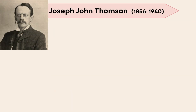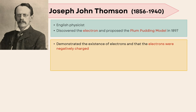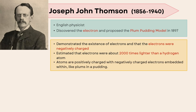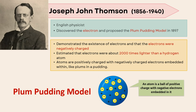Joseph John Thompson was an English physicist who discovered the electron and proposed the Plum Pudding model in 1897. He demonstrated the existence of electrons and that electrons were negatively charged. He estimated electrons were about 2,000 times lighter than a hydrogen atom. Atoms are positively charged with negatively charged electrons embedded within, like plums in a pudding. The Plum Pudding model illustrates atoms as a ball of positive charge with negative electrons embedded in it.